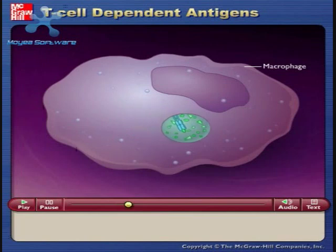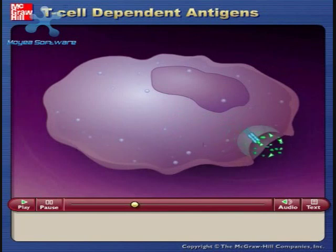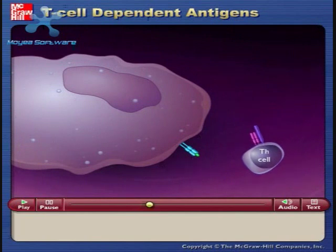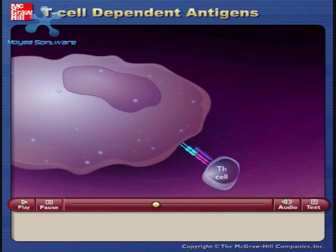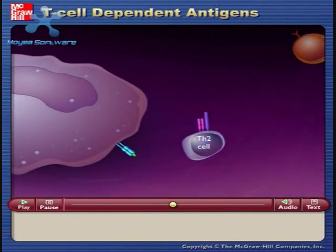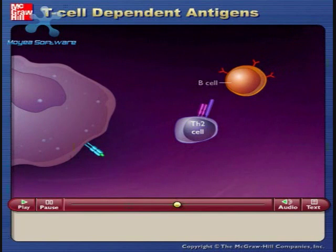The antigen is then moved to the surface of the macrophage on a class II MHC. The T cell receptor on the surface of a T helper cell recognizes the peptide antigen being presented on a class II MHC of the macrophage, and the T helper cell becomes activated. The activated TH2 cell is now capable of stimulating B cells.